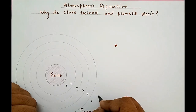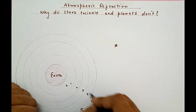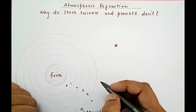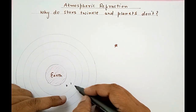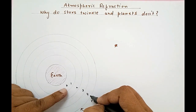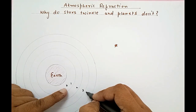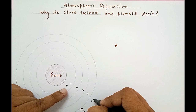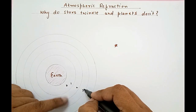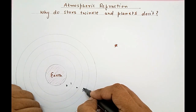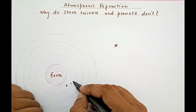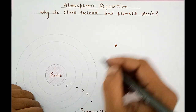If a ray of light travels from vacuum through the layers, it would constantly keep on bending towards the normal. Medium number one is the highest density medium compared to all of them, and the least dense medium is vacuum. Then each successive layer — four, three, two, one — becomes progressively denser.